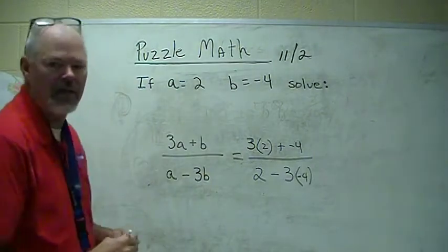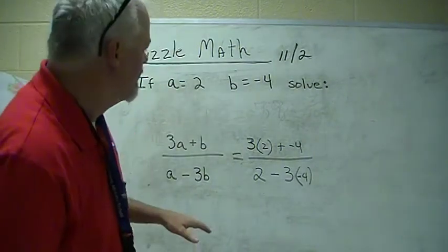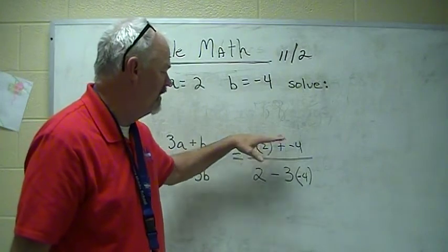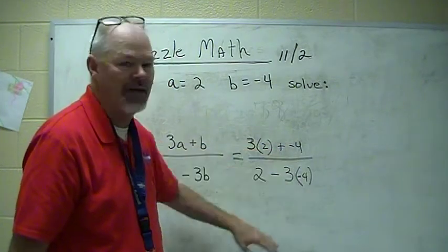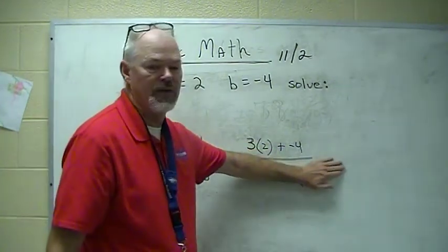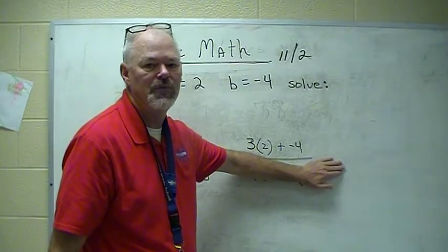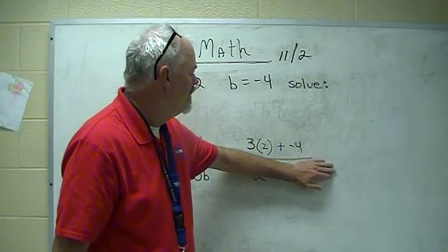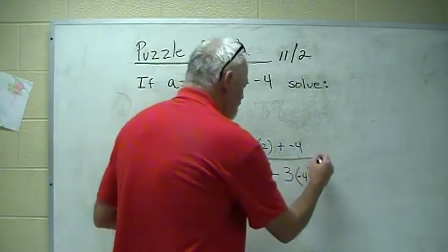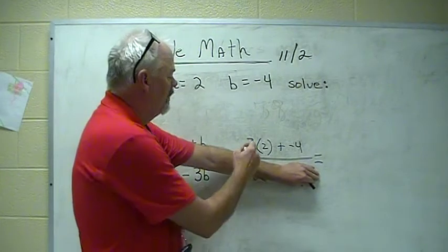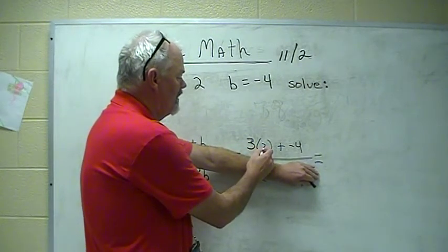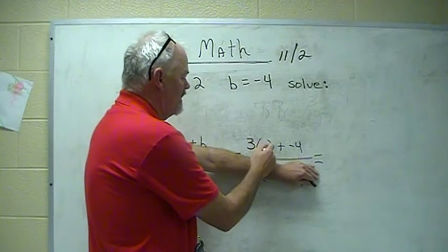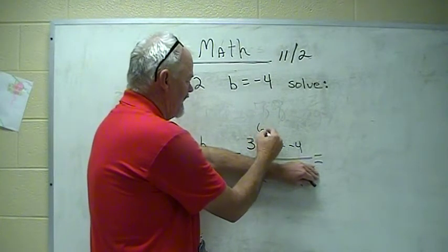But when we break it down, it's not gonna be. So, basically, if you ever have a problem here, and then a divided by, and a problem here, put something over this one and just worry about the top. Do one at a time. Just do one at a time. So, if we do that, not worry about this guy at all, we have 3 times 2, and then we have a plus a negative 4. So, 3 times 2, I'm gonna do it up here. This is 6.